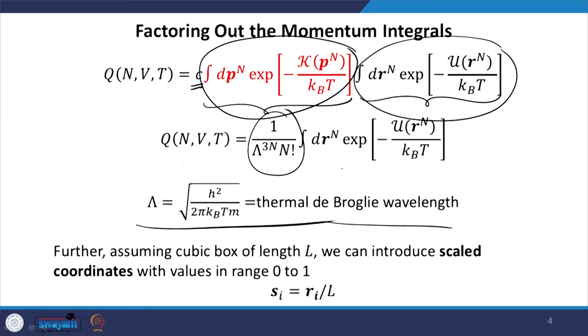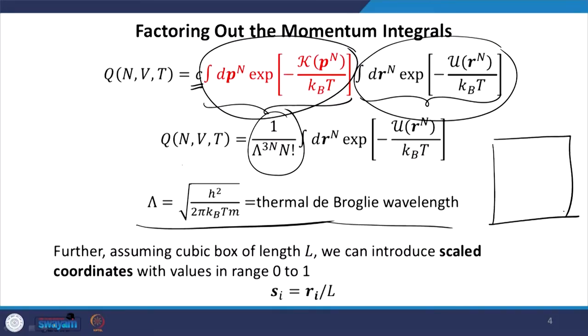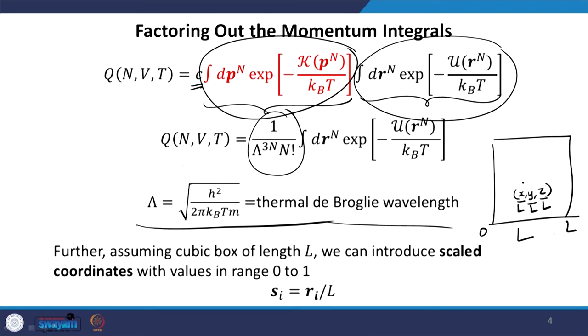Now we have the expression of the partition function with the momentum integral factored out. For convenience, I am going to introduce scaled coordinates instead of actual coordinates. In general the particles are in a box of length L, so pretty much every coordinate within the box can be normalized by the box size. I can divide every coordinate by L and that scaled variable will now range from 0 to 1, removing the effect of box size by introducing scaled coordinates.